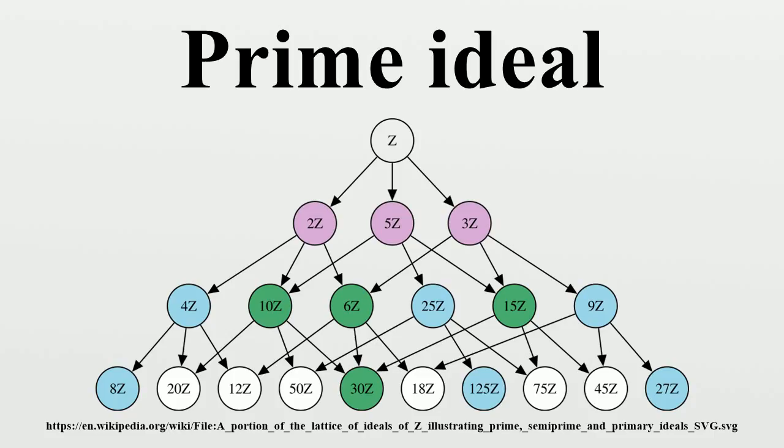For a commutative ring R, there is a kind of converse for the previous statement. If S is any non-empty saturated and multiplicatively closed subset of R, the complement R\S is a union of prime ideals of R.